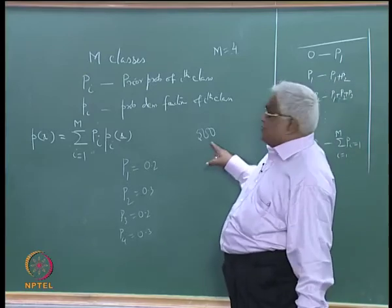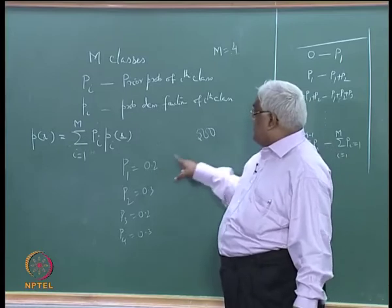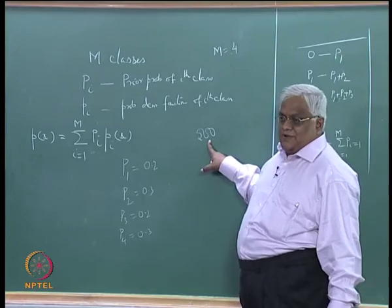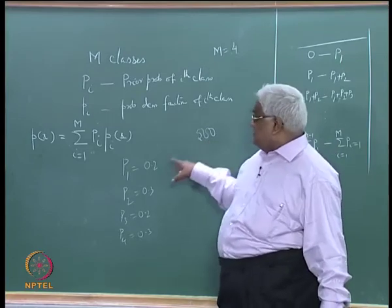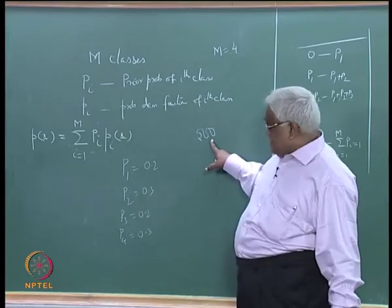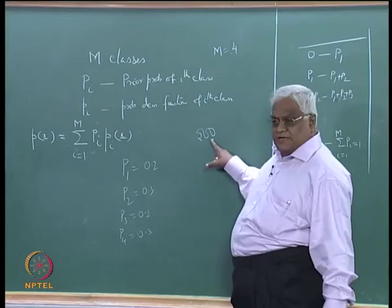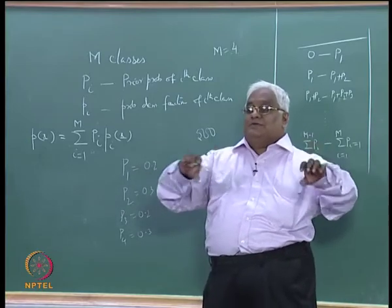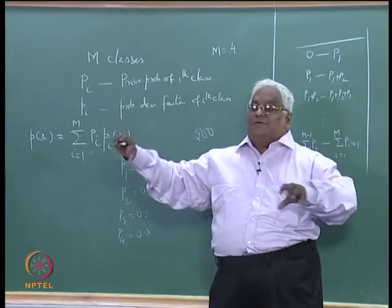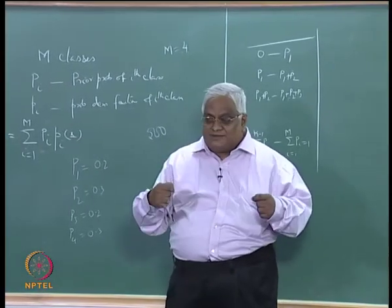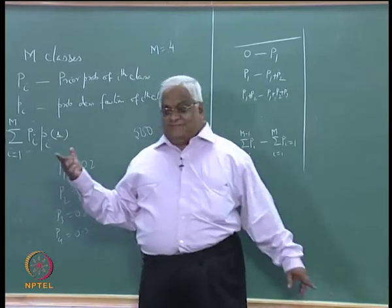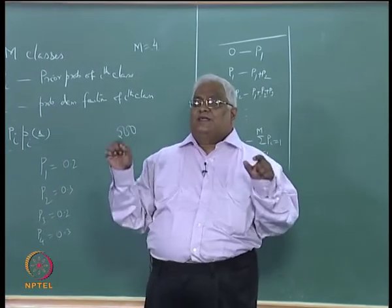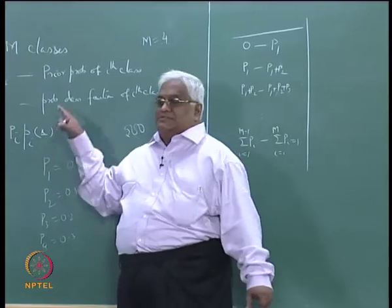If you draw 500 points, approximately 0.2×500 = 100 points will be from class 1, around 150 points from class 2, around 100 from class 3, and around 150 from class 4. In that way you are getting points from the four classes. This is what should have happened when drawing points independently and identically distributed from the mixture density function.